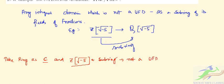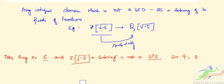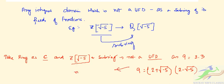As you can see, 9 can be written as 3 × 3, but it can also be written as (2 + √-5)(2 - √-5). So the factorization of 9 here is not unique. If the factorization does not have a unique form, then this is not a unique factorization domain.